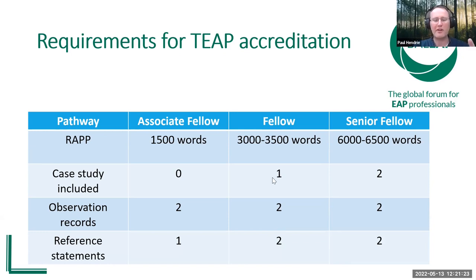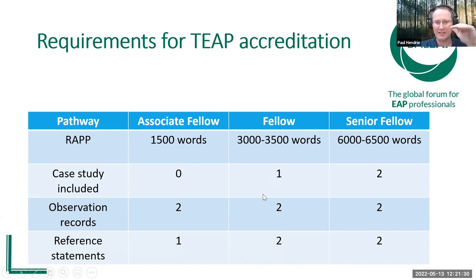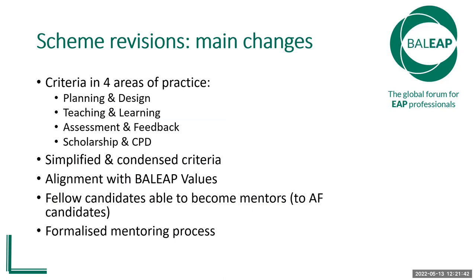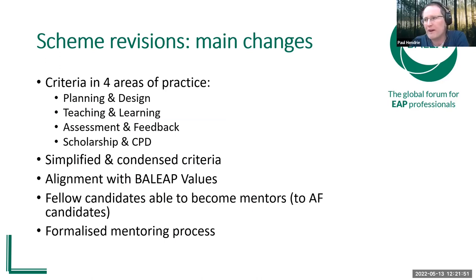If there are questions about this, we're going to look at that in more detail. You'll find all of this in the handbook, and none of it has changed significantly except for a slight reduction in the senior fellow word count. These are the main changes to the scheme. The old criteria — particularly at fellow and senior fellow — involved a number of pages with many criteria, including knowledge and competencies. We've simplified and collated those to four broad areas of practice.